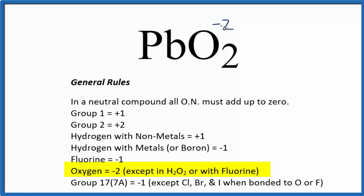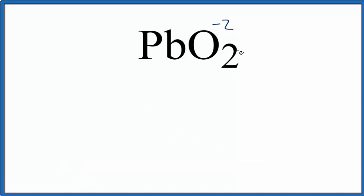So when we look at the oxygens we have two of them, so two times minus two, that's minus four. So to balance out that minus four, so we have a total of zero for the compound, this has to be a plus four.